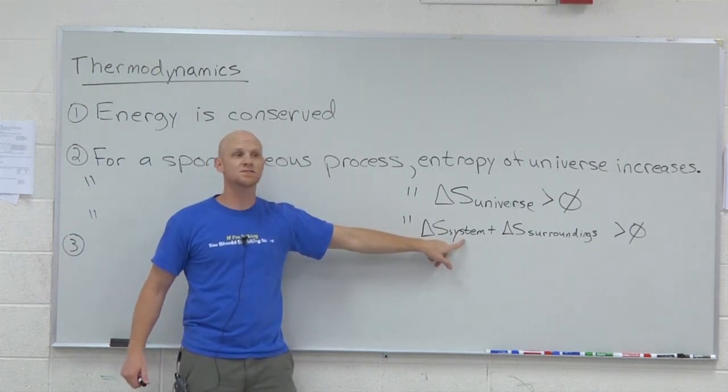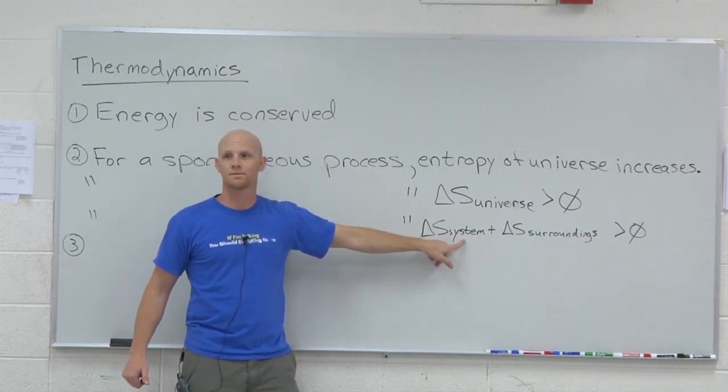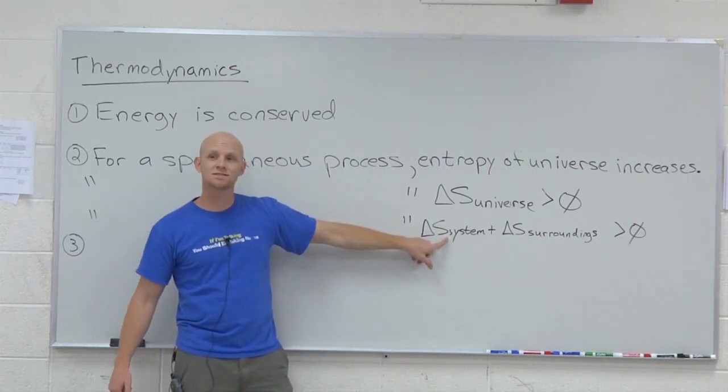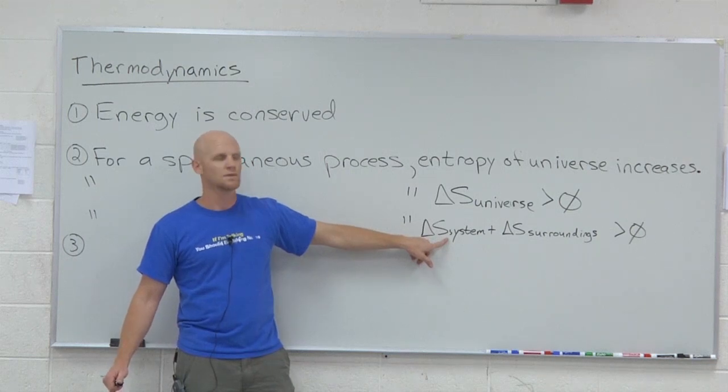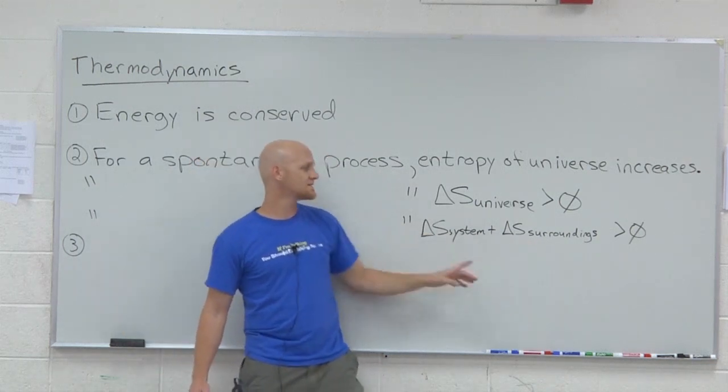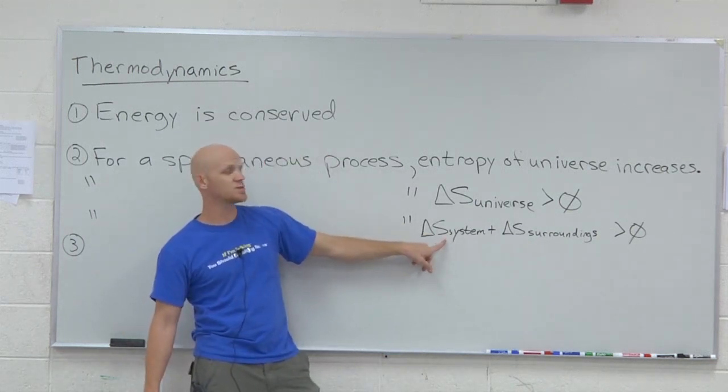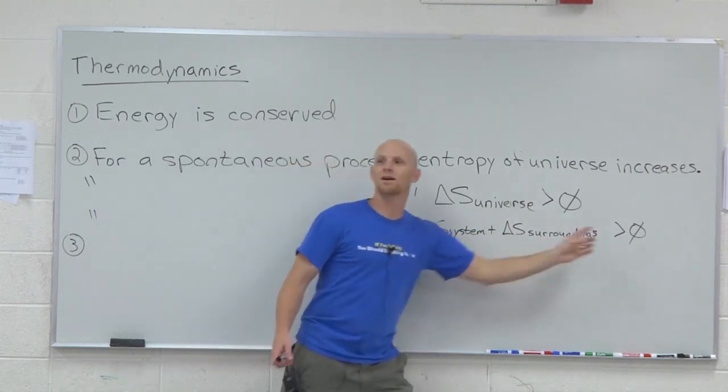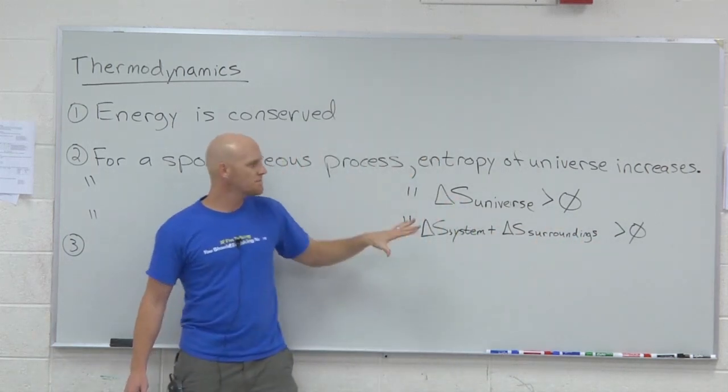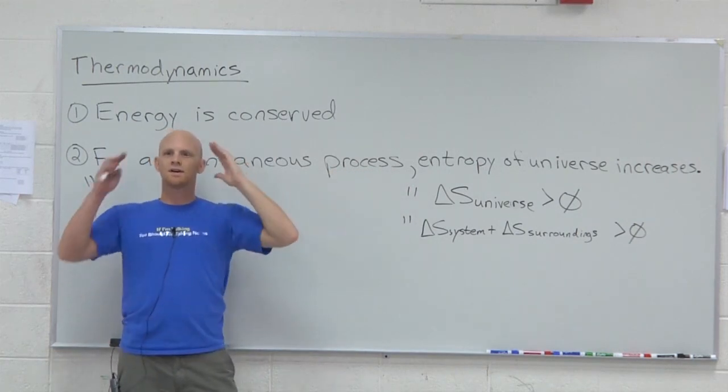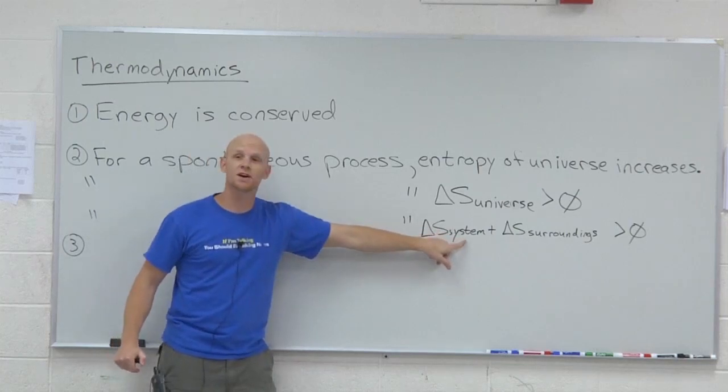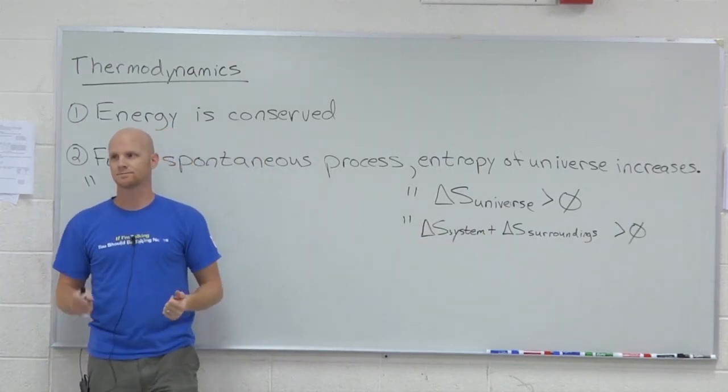Can the delta S of just the system be negative? Yeah, for sure. Delta S of a reaction can totally be negative. But let's say I told you that the delta S of the system was negative 100 joules. What would you know about the delta S of the surroundings? It's bigger than positive 100, that way when you add them together, it comes out positive. So a lot of students mix this up just a little bit and they think, oh, delta S of a reaction can't be negative because of the second law of thermodynamics. That's not true. Because the reaction is just the system, not the entire universe.